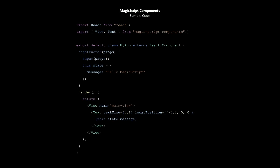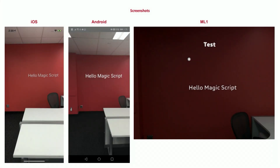Here's what a sample of the source code looks like. Starting at the top, we have the text and the view, which we take from our MagicScript components. In React, we set the state — we have 'Hello MagicScript' as the message. The render function makes use of the view and the text with properties for size and position, and the message itself is in the body of the text. This is the entire source code a developer would need to write to have it show up — we have iOS on the left, Android in the middle, and Magic Leap on the right.